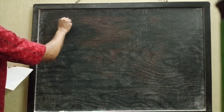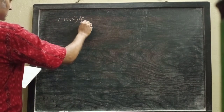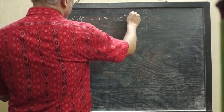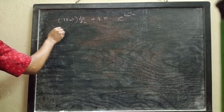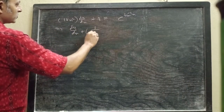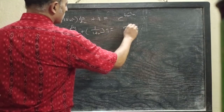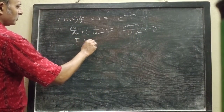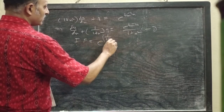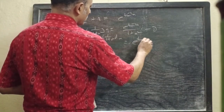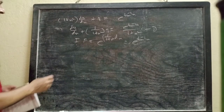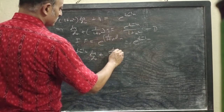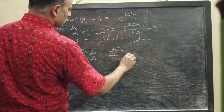The last problem of this class: (1 + x²) dy/dx + y = e^(tan⁻¹x). Dividing by (1 + x²): dy/dx + y/(1 + x²) = e^(tan⁻¹x) / (1 + x²). This is our equation (1). The integrating factor will be e^(tan⁻¹x). Multiplying both sides by e^(tan⁻¹x), we get e^(tan⁻¹x) dy/dx + e^(tan⁻¹x)/(1 + x²) × y.